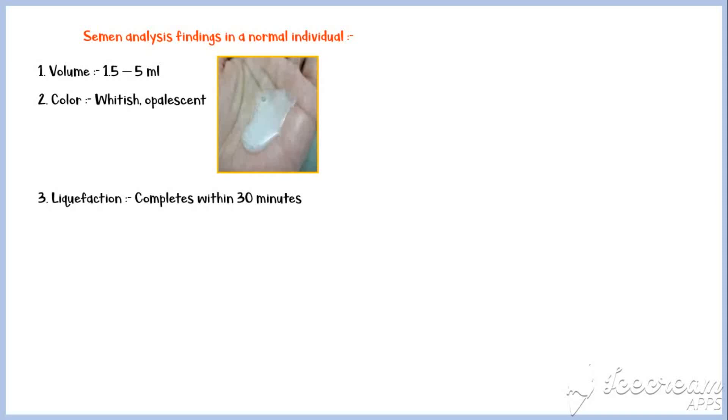Semen has a pH value around 7.2 to 8. Total number of sperms per ejaculate should be more than 39 million, and the normal sperm concentration should be more than 15 million per 1 milliliter of the ejaculate.